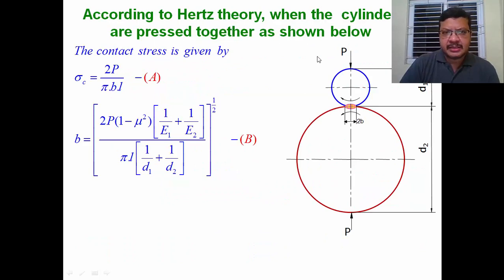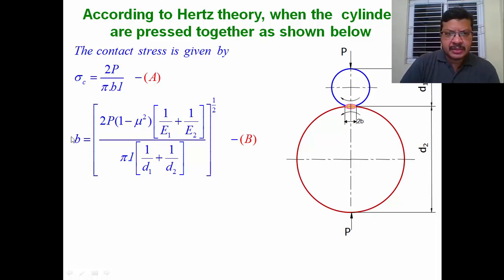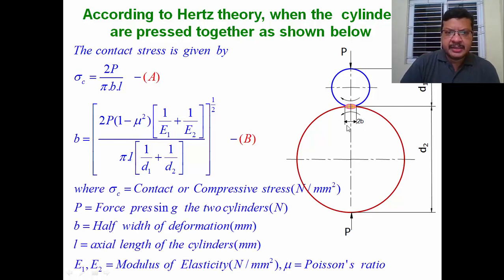Hertz theory is something like this. When two cylinders of diameters D1 and D2 are in contact, as shown here, under the action of force P applied like this, then at the point of contact you can observe deformation. This deformation will be in elliptical form and the total deformation is indicated with 2b, where half of that is b. This is the equation for b, and this is the equation for contact stress or compressive stress. P is the load acting, b is the half-deformation, and l is the length of the cylinders.